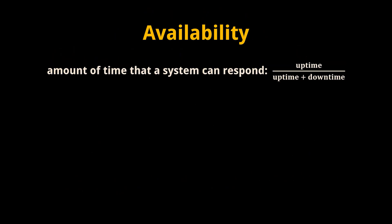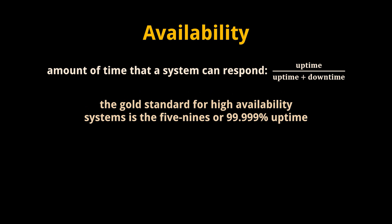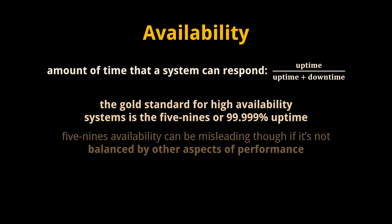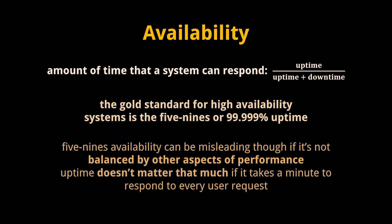Finally, availability is the amount of time that the system can respond — it's the ratio of uptime over uptime plus downtime. Availability is a critical metric for a service because downtime can harm users who rely on the system and cause a business to lose large profits in a short amount of time. The gold standard for high availability systems is five nines, or 99.999% uptime. By comparison, 90% uptime is about 17 hours of downtime a week, and 99% is about 1.7 hours of downtime a week. Five nines availability can be misleading, though, if it's not balanced by other aspects of performance and user experience — uptime doesn't matter much if it takes a minute to respond to every user request.